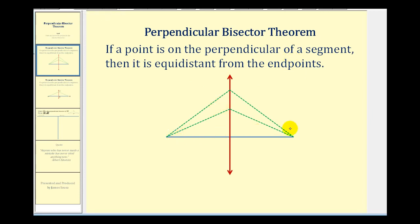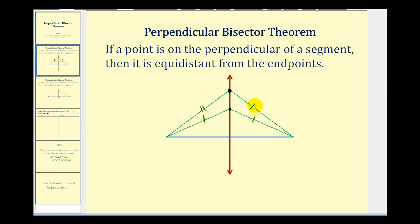So if we have this blue segment and this red perpendicular bisector, if we consider any point on the red line — for example, this point here and this point here — this theorem tells us that these two black points will be the same distance from the two endpoints. In other words, this green segment here is congruent to this green segment here, and this green segment here is congruent to this green segment here.